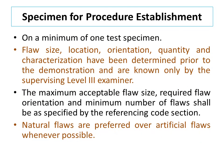Specimen for procedure establishment: a minimum of one test specimen is needed. Flaw size, location, orientation, quantity and character shall be determined prior to the demonstration and are known only by the supervising Level 3 examiner. The maximum acceptable flaw size, required flaw orientation and minimum number of flaws shall be as specified by the referencing code section. Natural flaws are preferred over artificial flaws whenever possible. The two main points are: minimum one specimen is needed, and natural flaws are preferred. The flaw details are known only to the supervising Level 3 examiner.